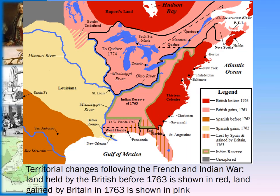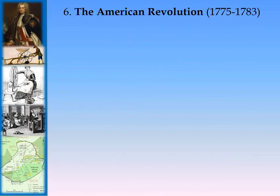Here are the territorial changes following the French and Indian War. Land held by the British before 1763 is shown in red; land gained by Britain in 1763 is shown in pink — a huge amount of territory. The Louisiana territories remained French and Spanish. The American Revolution would be a byproduct of the French and Indian War, which was part of the Seven Years' War.